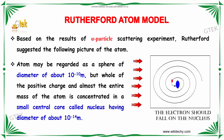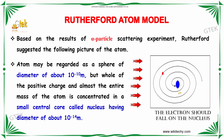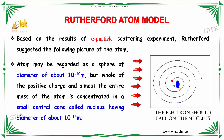Based on the results of alpha particle scattering experiments, Rutherford suggests the following picture of the atom. The atom may be regarded as a sphere of diameter of about 10 to the power minus 10 meter. But the whole of the positive charge and almost the entire mass of the atom is concentrated in a small central core called the nucleus, with a diameter of about 10 to the power minus 14 meter.